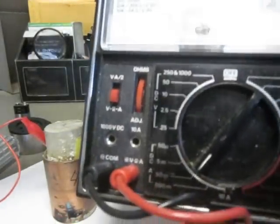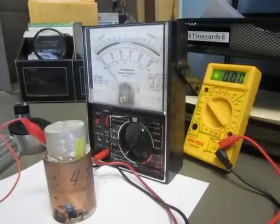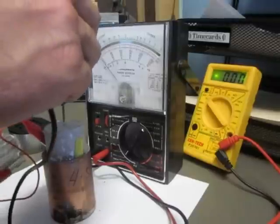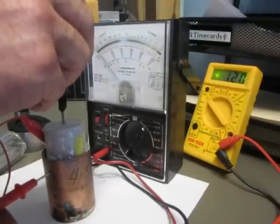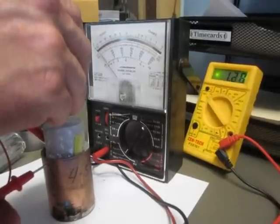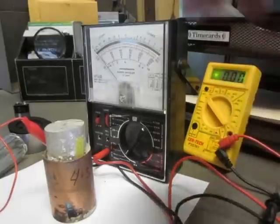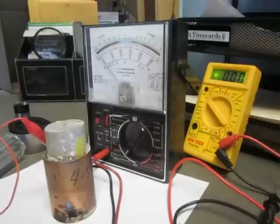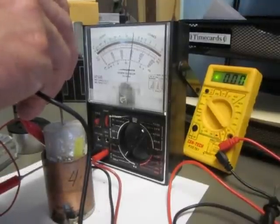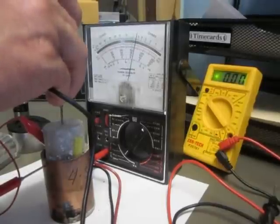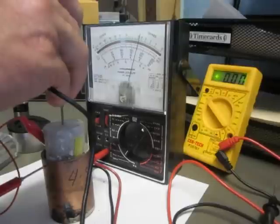Ok, so this is set on 50. Reading 0.2, 0.3, fluctuating. So like 35, it's pretty constant.